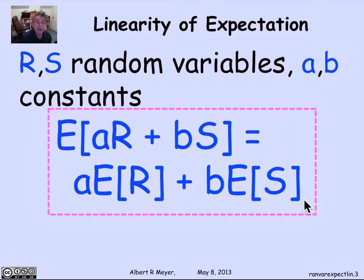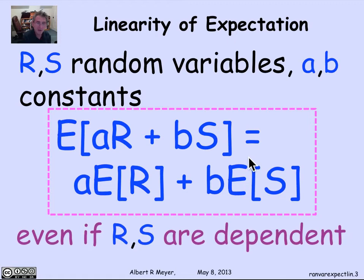That's an absolutely fundamental formula that you should be comfortable with and remember. It extends not only to any finite number of variables, but with some convergence conditions, it actually extends even to a countable sum of variables. But let's just settle for the two random variable case for today. The crucial thing that makes it so powerful and useful is that this fact has nothing to do with independence — whether r and s are independent or equal, it doesn't matter. This linearity holds.